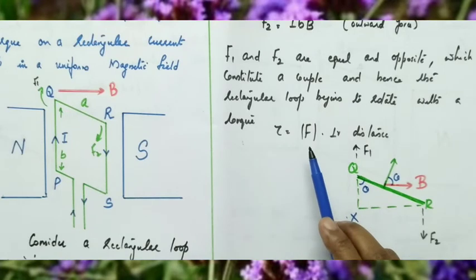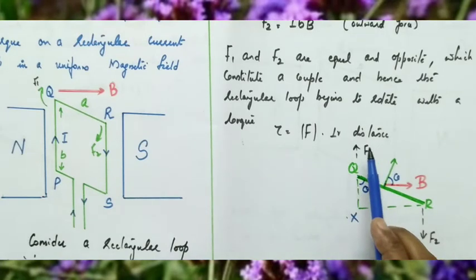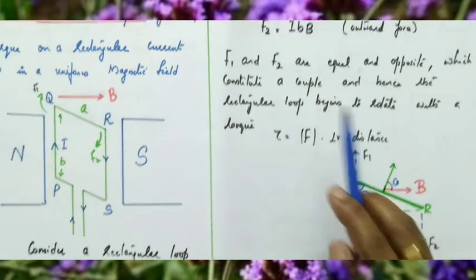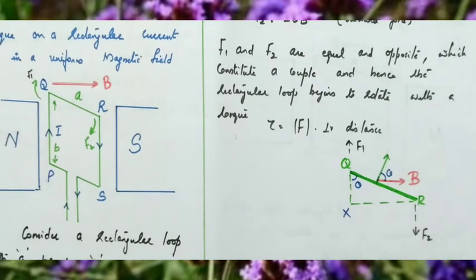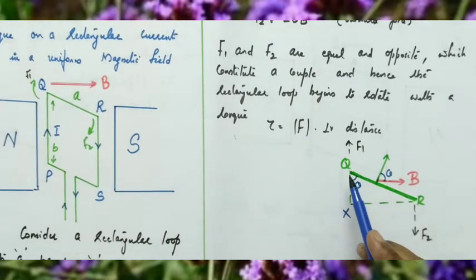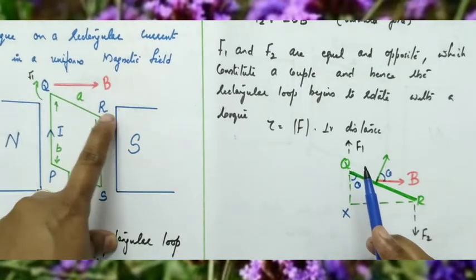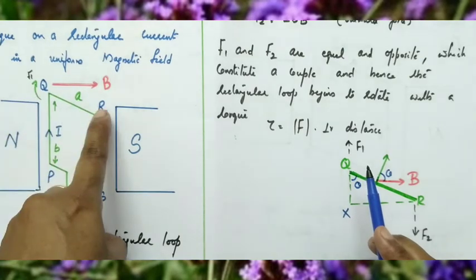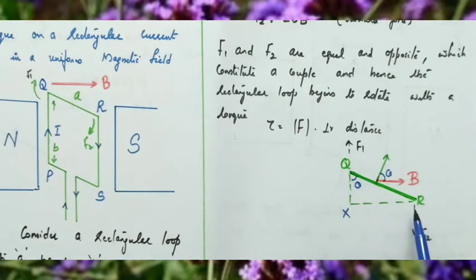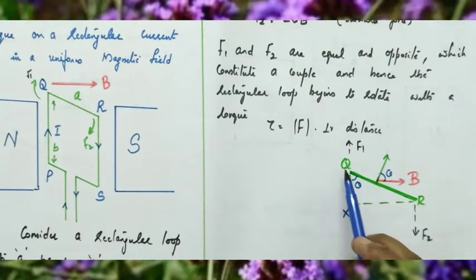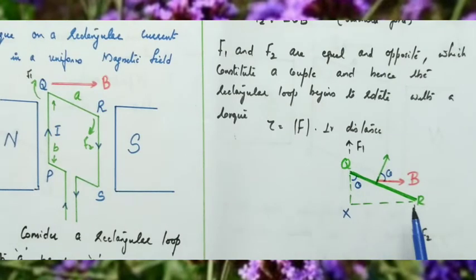Torque is given by magnitude of force times perpendicular distance. The magnitude of force is F1 or F2, equal to IBB. One force acts into the plane and the other acts outward. The perpendicular distance between the two forces is not QR but XR, which represents the actual perpendicular distance between the lines of action.